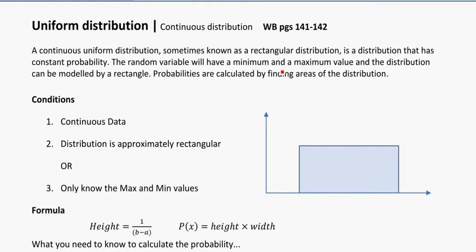Now, it's sometimes known as a rectangular distribution, and that's because it's got a constant probability. So if you look at the shape of it, it does end up looking like a rectangle with a flat top, meaning the probability is always going to be constant.